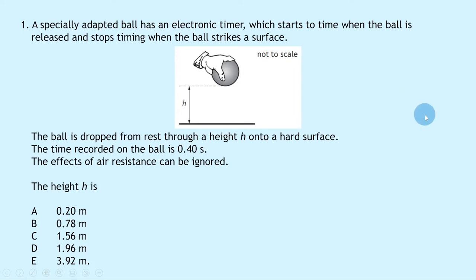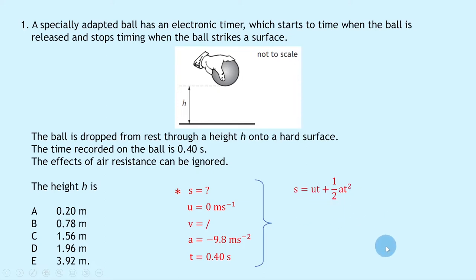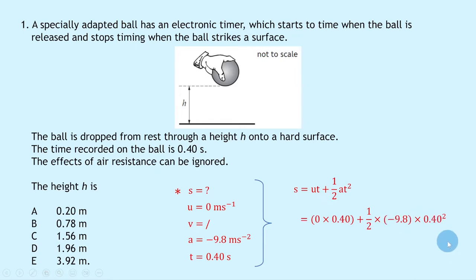To do this question we need to think about equations of motion and we're going to start with SUVAT. Writing down what we know: we're trying to find displacement S, which is the height. The initial speed U is 0 m/s because the ball is dropped from rest. We don't know V. Acceleration A is minus 9.8 m/s² assuming upwards is positive. Time T is 0.40 seconds. We use S = UT + ½AT². Substituting in: 0 × 0.40 plus ½ × (−9.8) × 0.40² gives minus 0.78 metres. The negative just tells us the ball moves downward, so the height is 0.78 metres, which is answer B.